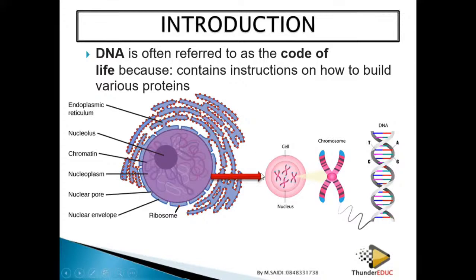When I talk about chromatin network, chromosomes, DNA, and genes — those are the same thing but on different scales. For example, where do you stay? Africa → South Africa → Gauteng → Johannesburg → Florida. Similarly, chromatin network, chromosome, DNA, and genes are almost the same thing but at different scales. When defining them, however, you define them differently.